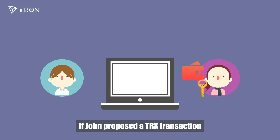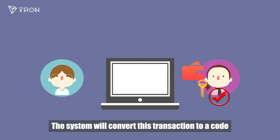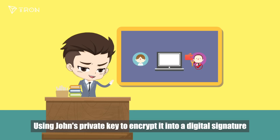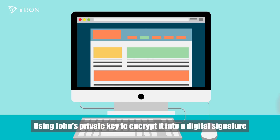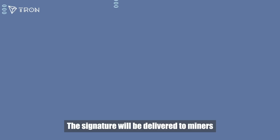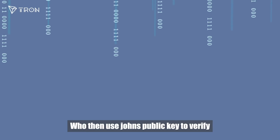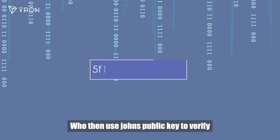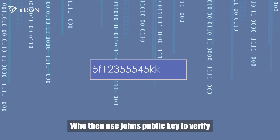If John proposed a TRX transaction, the system will convert this transaction to a code, using John's private key to encrypt it into a digital signature. The signature will be delivered to miners, who then use John's public key to verify.